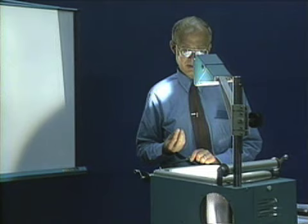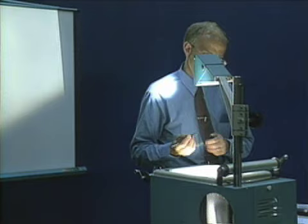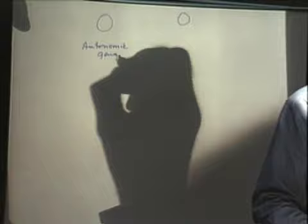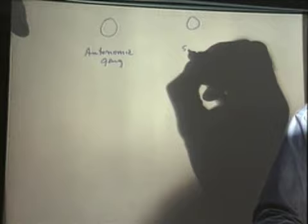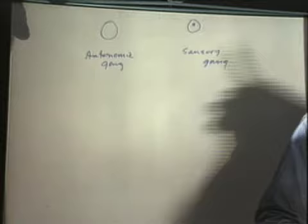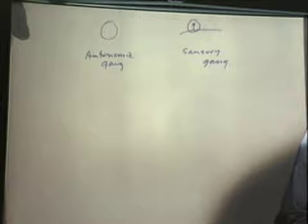One cell body is located in the central nervous system, and the other is located in a peripheral ganglion somewhere. An autonomic ganglion is going to have a synapse in it — in contrast with a somatic or sensory ganglion. The dorsal root ganglion is an example of a sensory ganglion with cell bodies and processes but no synapses.